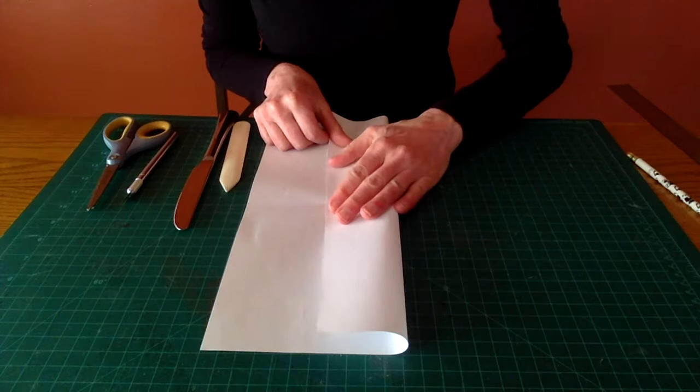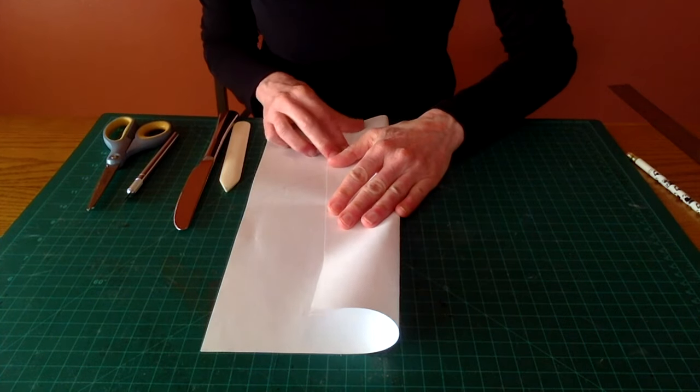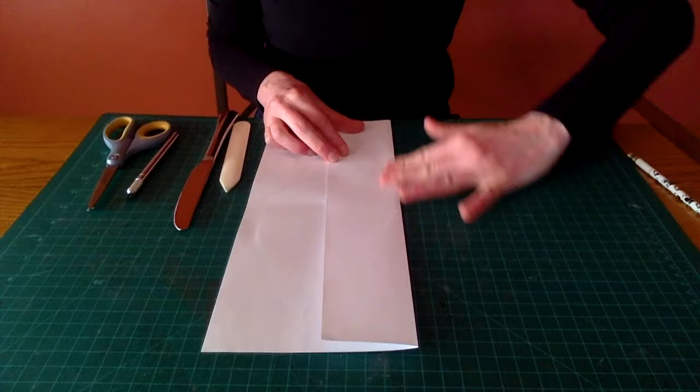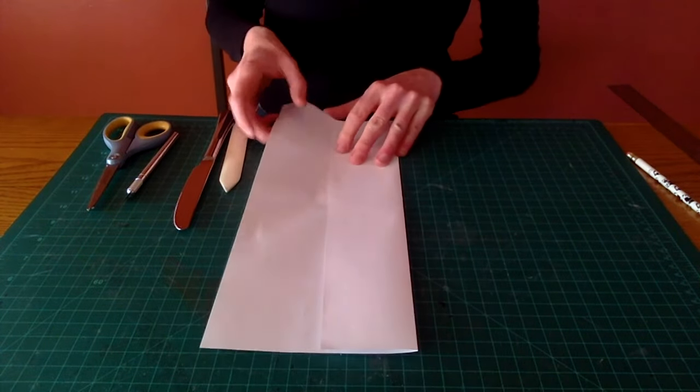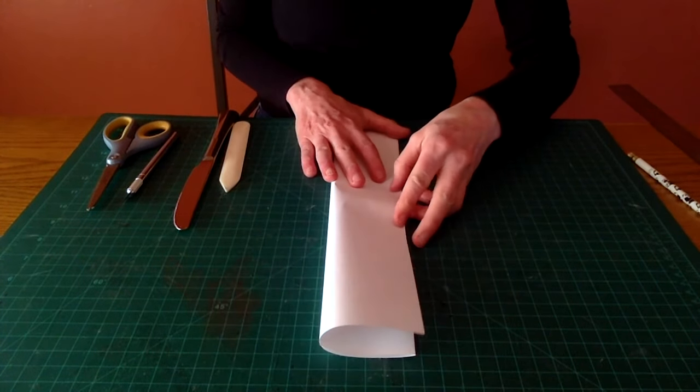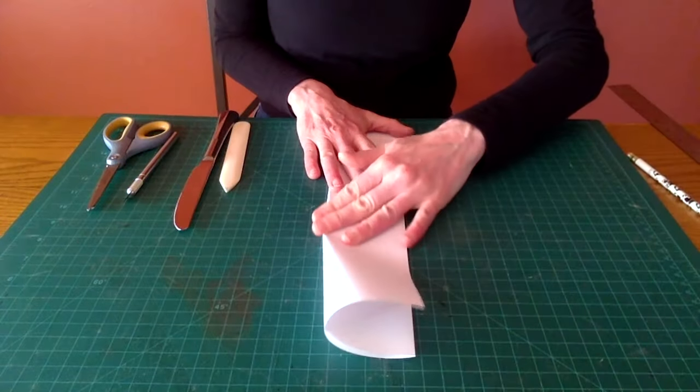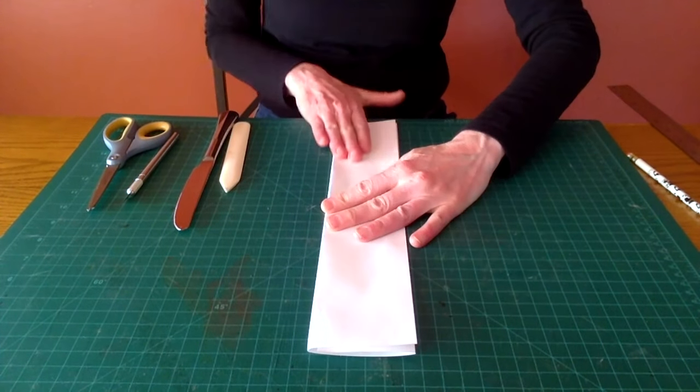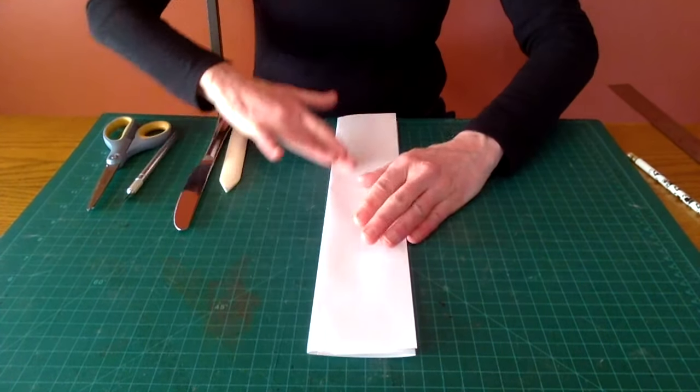So you can fold your left side to that intersecting point, and then fold your right side the same way.